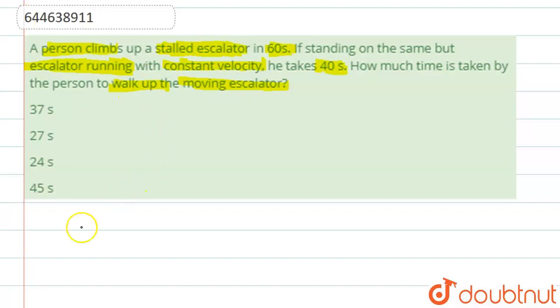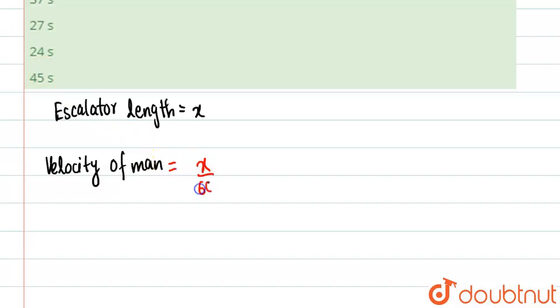So basically, it's given that a person... let's suppose the escalator length is x. So velocity of man will be equal to x by 60. And velocity of escalator, similarly, if we think...